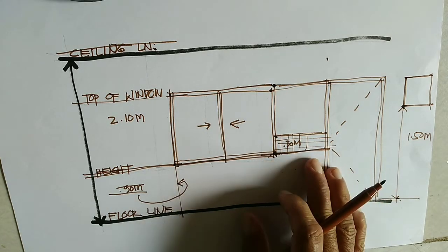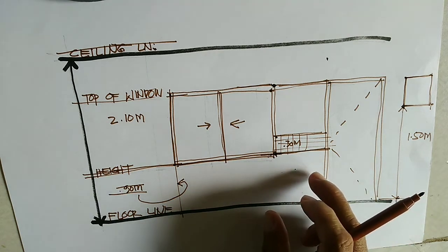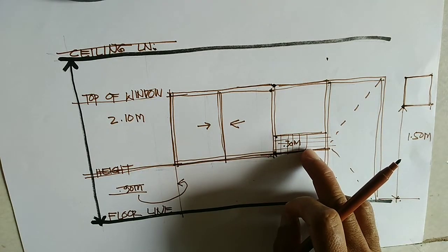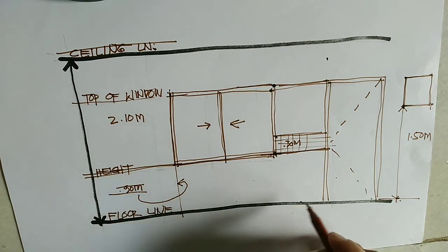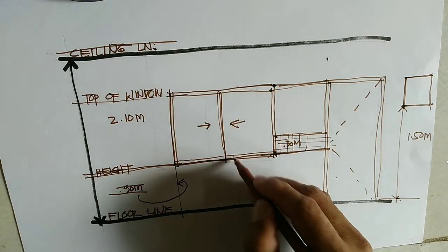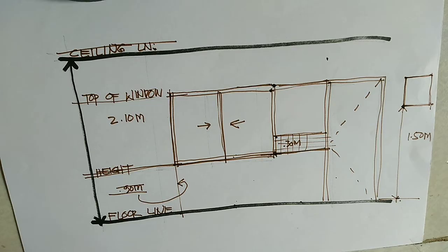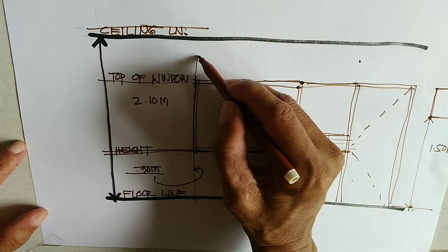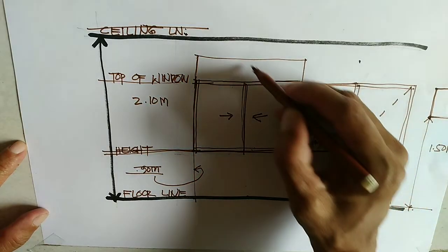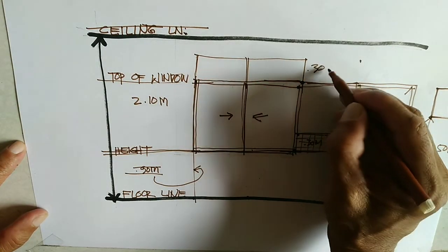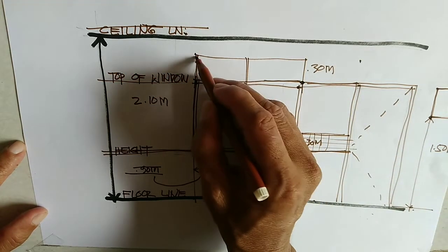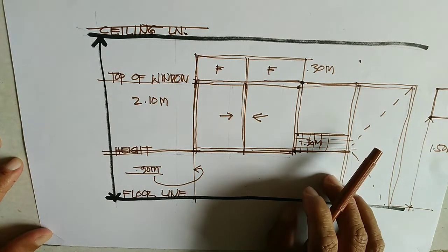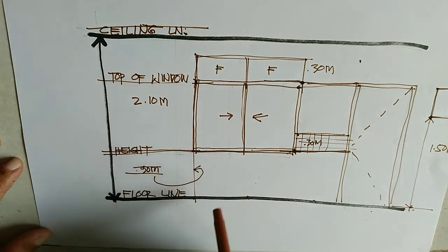Let me show other customized window models — those that don't follow the standard. For kitchen, 1.20 meters from the floor line; for CR, 1.50 meters; and for standard rooms, 0.90 meters from the floor line. Some people also add what's called a transome above the window, with a size of about 0.30 or 0.40 meters — and that part is fixed. That's the recommended heights from the floor line.